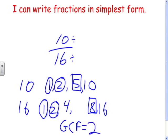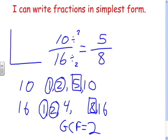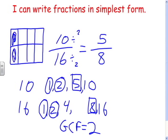So we divide both by 2: 10 divided by 2 is 5, and 16 divided by 2 is 8. So 10 sixteenths equals 5 eighths. That's a lot easier to picture in your head than 10 sixteenths.